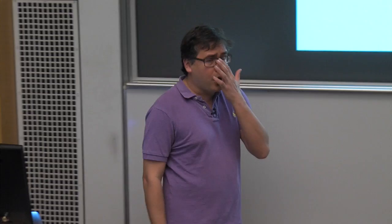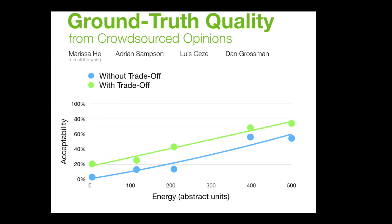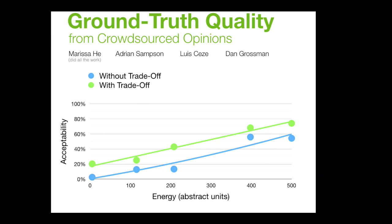We've done studies using Mechanical Turk to validate this. We showed degraded images to people and asked which are acceptable. For one group with no trade-off context, they gave one acceptability threshold. For another group we told them that choosing lower-quality images would make their phone battery last an hour or two longer — those people were much more tolerant of degraded output. This shows that if you give people an incentive, they're willing to accept less-good output for longer battery life or lower power bills.